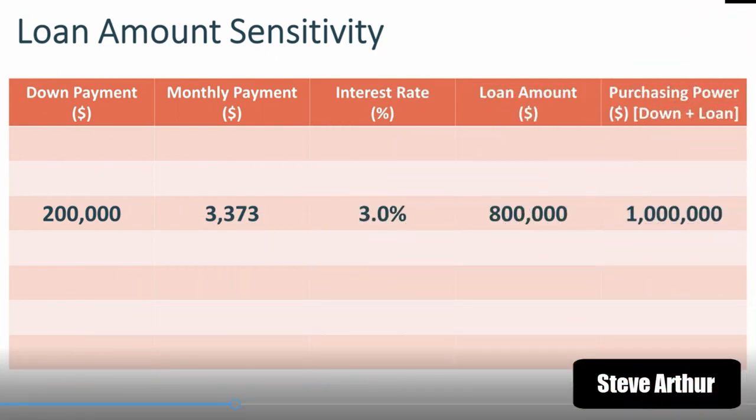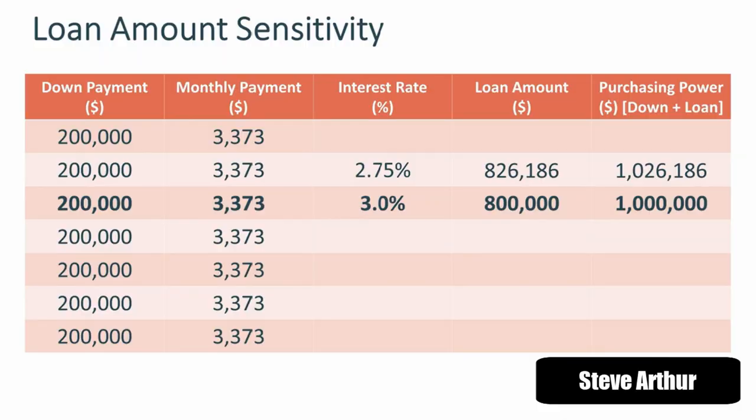Let's put this into a table so we can see the sensitivity between different rates. In this table, we have the down payment, the monthly payment, the interest rate, the loan amount, and the total purchasing power. Purchasing power is the down payment plus the loan amount. Let's assume the down payment and mortgage payment is what the buyer can afford, and nothing more — so the only thing changing is the interest rate. With an interest rate of 2.75%, the buyer can get a larger loan equal to $826,000 with the same monthly payment — $26,000 more.